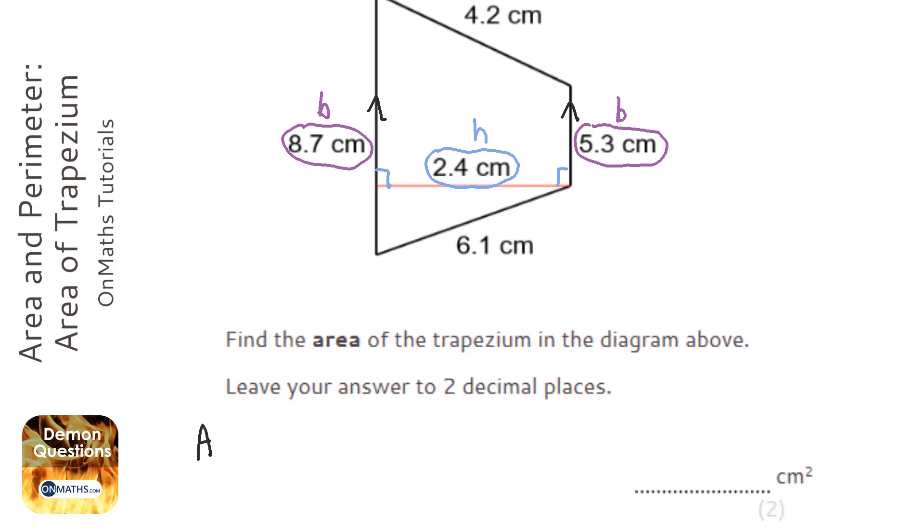So to work out the area we're going to add together the two bases, the 8.7 and the 5.3, and then we're going to halve it to find out what the average of those two things are. It's like the mean. You add them together, there's two of them, so therefore you divide them by two. Then we're going to times it by the height.